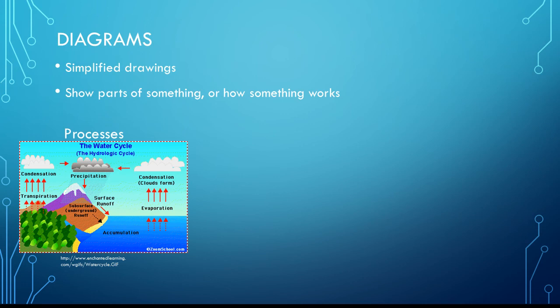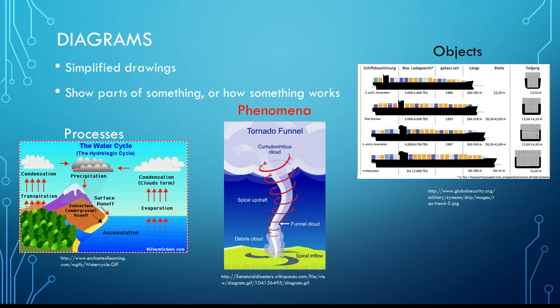They can show processes like the water cycle, phenomena like a tornado, or they can just label the parts of an object. Here are one of those giant shipping container ships that we looked at earlier this year.